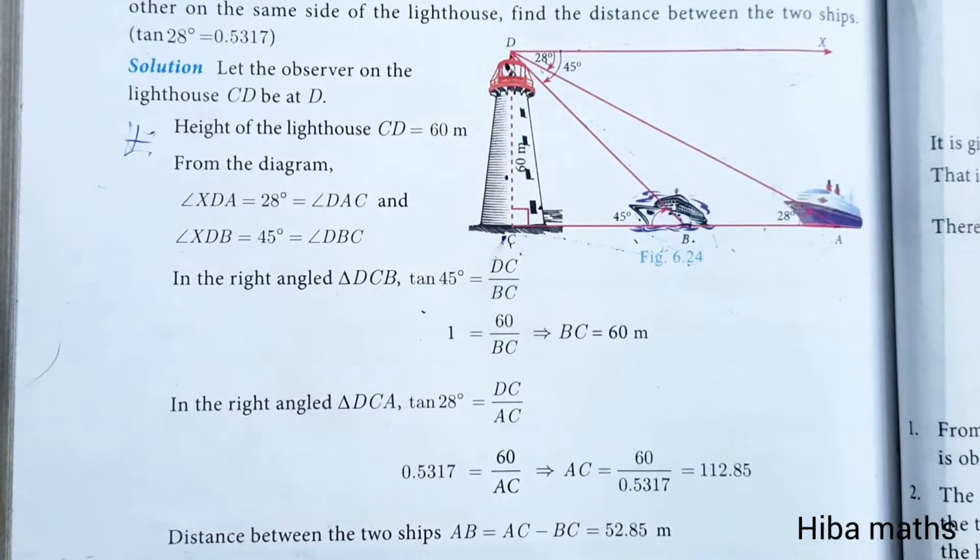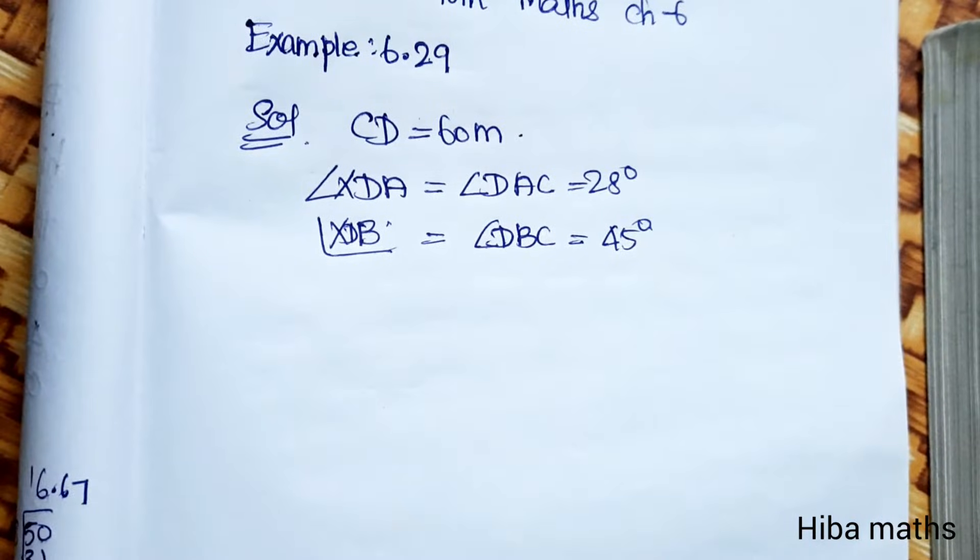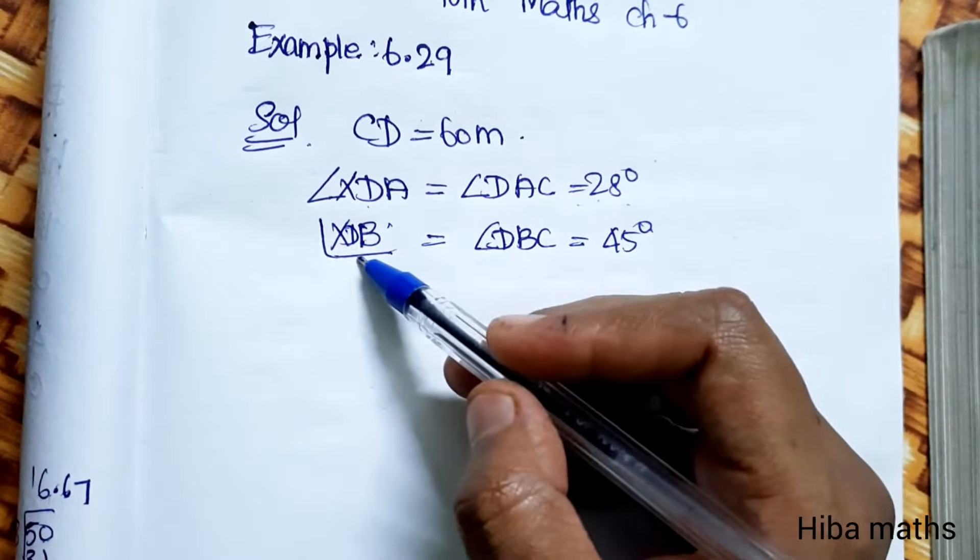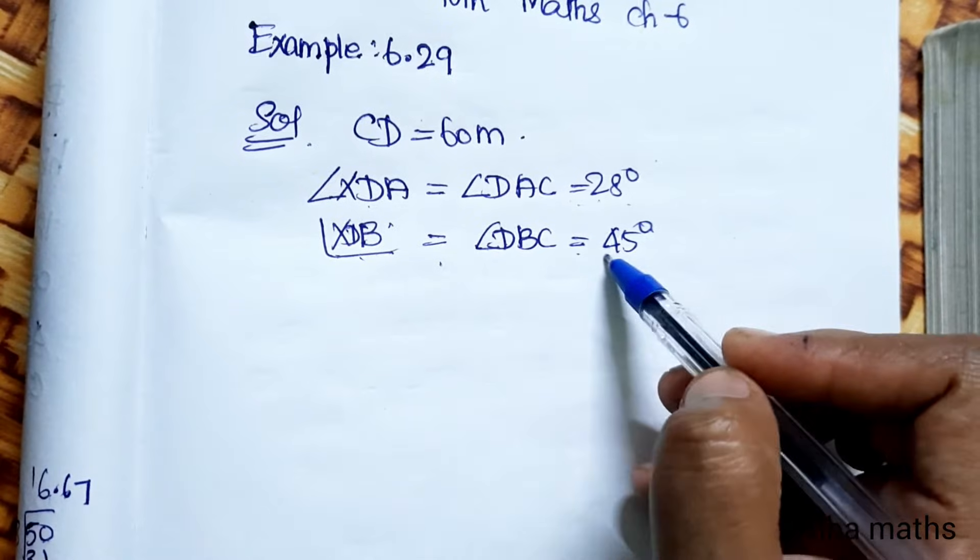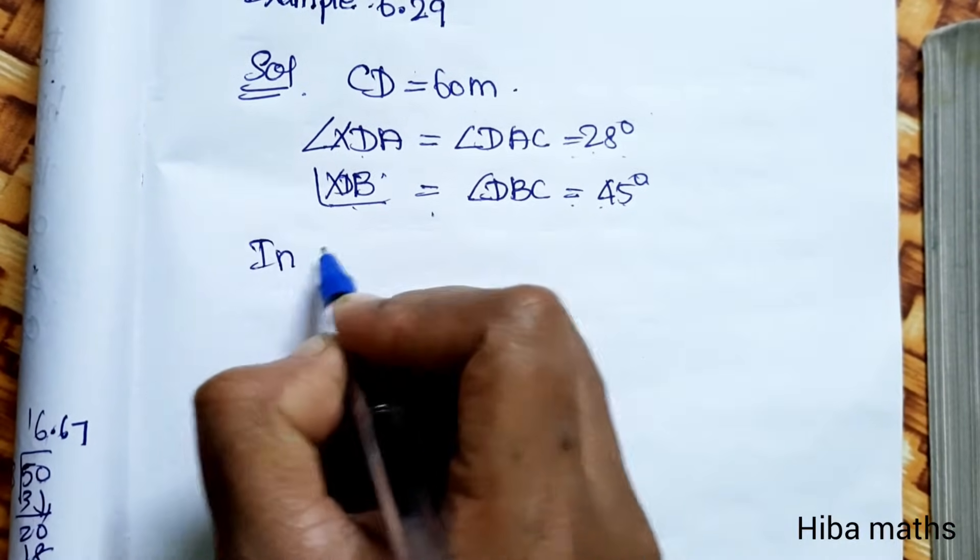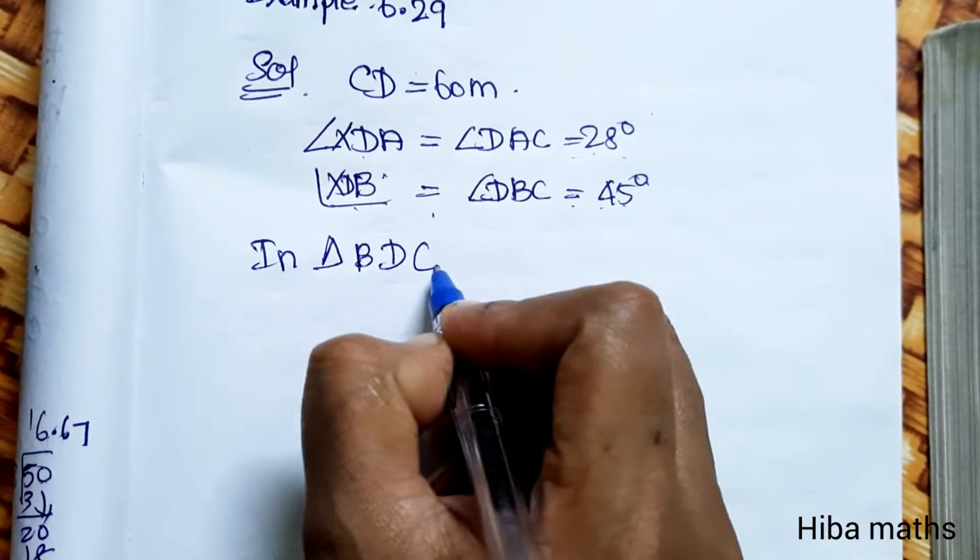In the solution, given the data, the lighthouse CD that is 60m, angle XDA angle DAC equal that is 28 degrees, angle XDB angle DBC equal that is 45 degrees. I explained this in the diagram, so first I will take the triangle BDC.